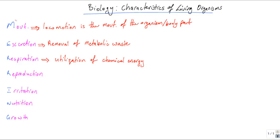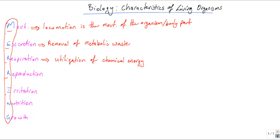To help memorize all of them, the phrase 'MR NERG' — which you can see here in blue — is used. From that you can see the meaning of each letter: Movement, Excretion, Respiration, Reproduction, Irritation, and Growth.